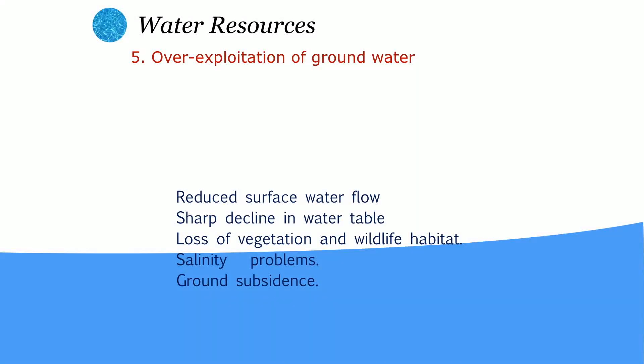Because of the over-exploitation of groundwater, we face several problems. One is reduced surface water flow. There will also be a sharp decline in the water table, leading to loss of vegetation and wildlife habitat due to less water availability. Another problem is a salinity problem: as water goes down, the concentration of salt in it increases. Finally, there is ground subsidence, which means the land sinks because of hollows created inside the land.